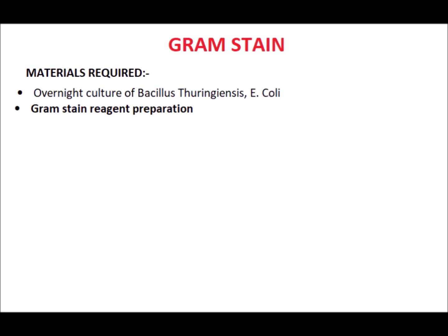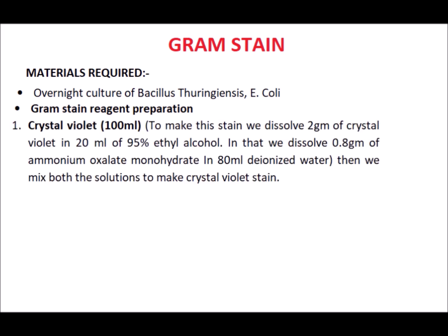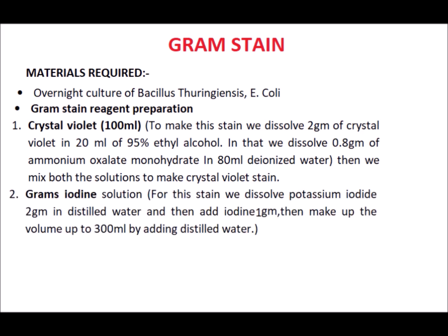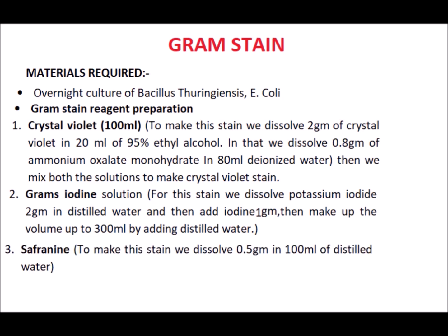For Gram stain reagent preparation: Crystal violet — dissolve 2 grams of crystal violet in 20 milliliters of 95% ethyl alcohol, then dissolve 0.8 grams of ammonium oxalate monohydrate in 80 milliliters of deionized water, and mix both solutions. Gram's iodine — dissolve 2 grams of potassium iodide in distilled water, add 1 gram of iodine, and make up the volume to 300 milliliters with distilled water. Safranine — dissolve 0.5 grams in 100 milliliters of distilled water. Also required: 95% ethyl alcohol.